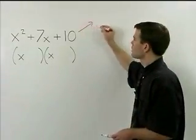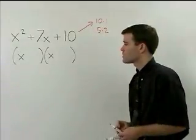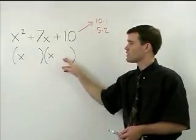Ten can be thought of as ten times one, or it can also be thought of as five times two. So how do we know whether to use a ten and a one or a five and a two?